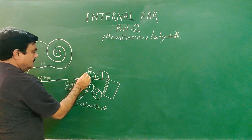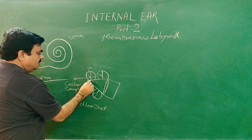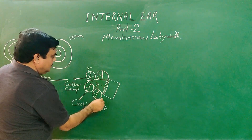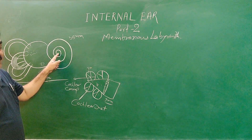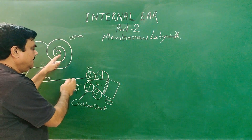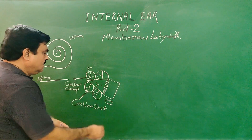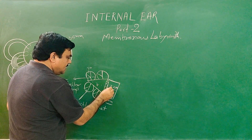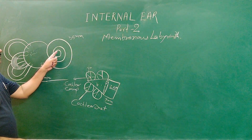The cochlear duct has a length of about 35 mm. From side to side it is 5 mm, and at the base it is about 90 mm. The gyration of the apex, also called the cupola, is dilated on the lateral side. The base lies on the internal acoustic meatus. The apex is known as the cupola.